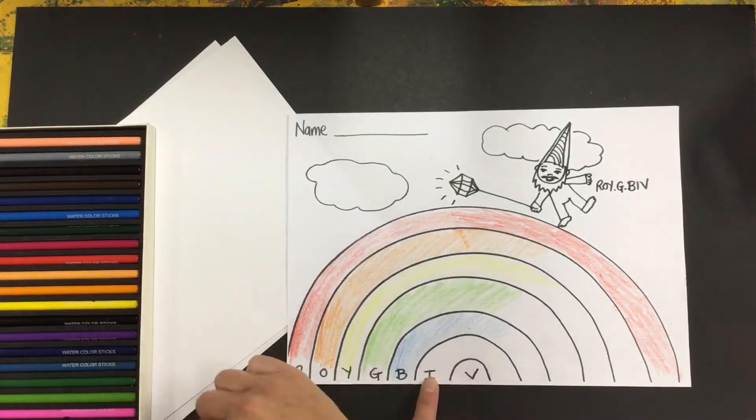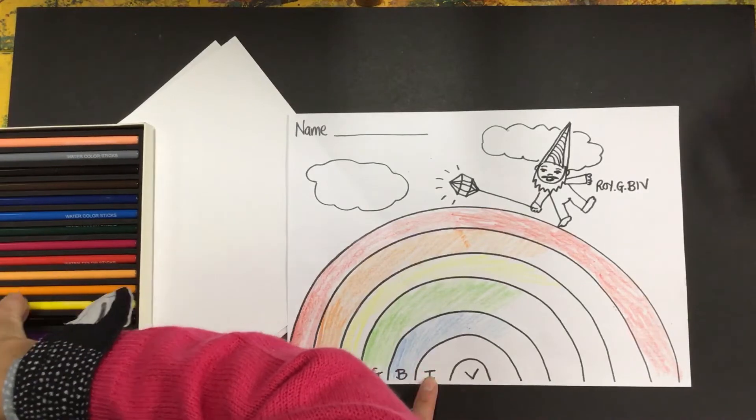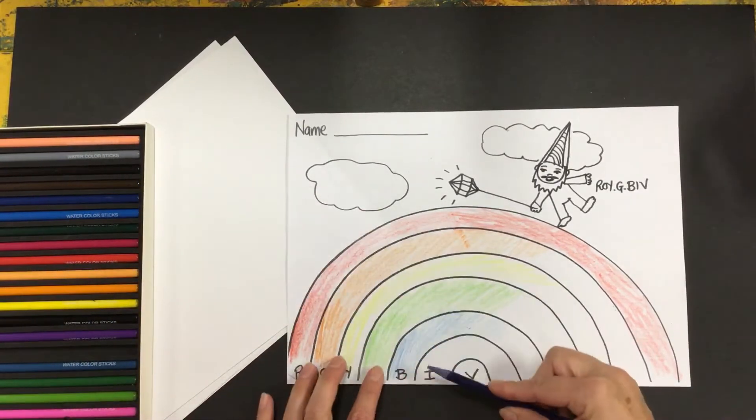I is for indigo. Now indigo is a dark blue color.